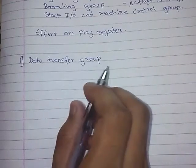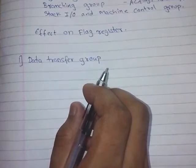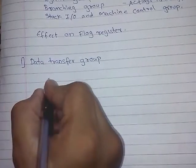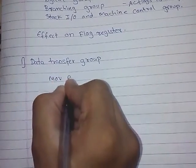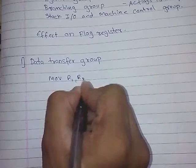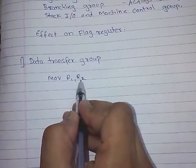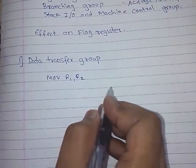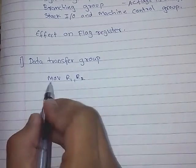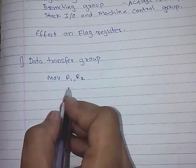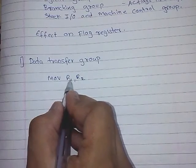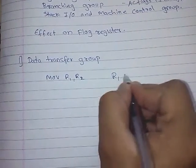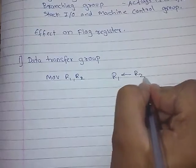Now we know what the data transfer group is. Now we will see some of its examples. Like MOV R1, R2 — here R1 and R2 can be any register like A, B, C, D, E, H, or L. When we write this instruction, data from R2 will go into R1. So after this instruction, R1 will become R2.